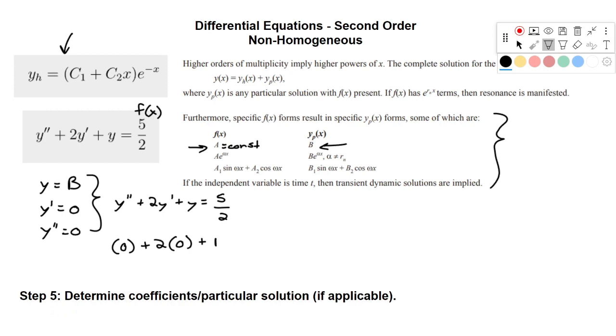And y we said with some value b, and all of that equals 5 over 2. And therefore we get b, which is our particular solution, equals 5 over 2.